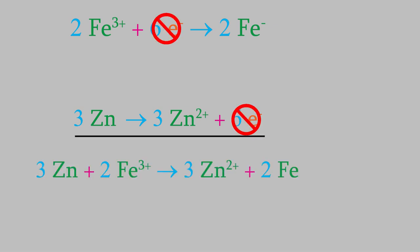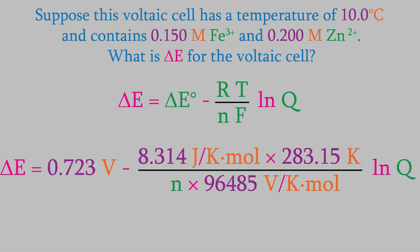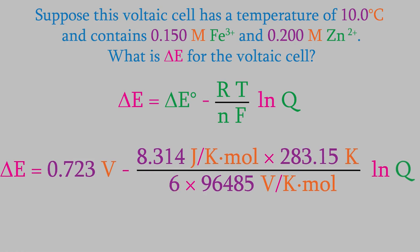Next, we go back to the Nernst equation and plug in the value of R and the temperature, which is 283.15 Kelvin. N is the number of electrons that get transferred, and we just saw that this is 6 electrons.